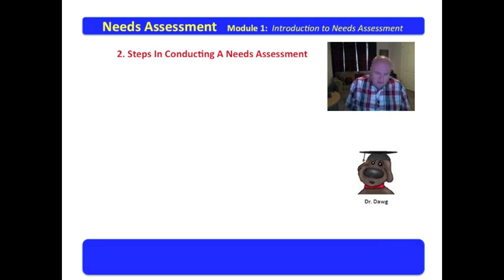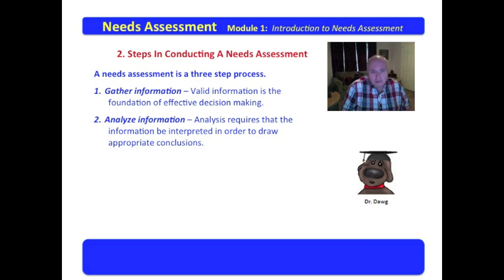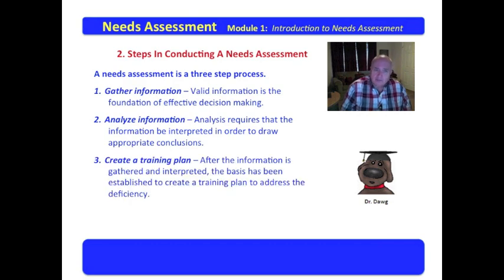Now let's look at the steps in conducting a needs assessment. These steps are broad, but a needs assessment is a three-step process. First, you gather information — valid information is the foundation for effective decision making. Note the distinction between information and data: data is a plural term, and information takes that data and transforms it into something which can be understood. The next step is analyzing the information, which requires interpretation in order to draw appropriate conclusions. Then, once you've gathered and analyzed the information, you create a training plan to address the deficiency. Gather, analyze, and create.